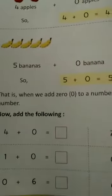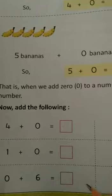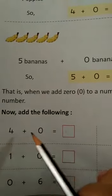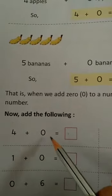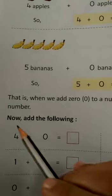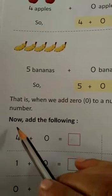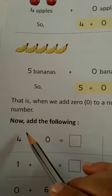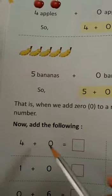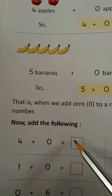Aise hi yahaan par kuch sums di hai. Aap ko unko solve karna hai. I will give you one more example. 4 plus 0 equal to 4. Aap line draw karke bhi kar saktay hai. 1, 2, 3, 4. And 0? Aatla aap koi bhi line draw nahi karna hai. Tho aap ko 4 plus 0 equal to 4.